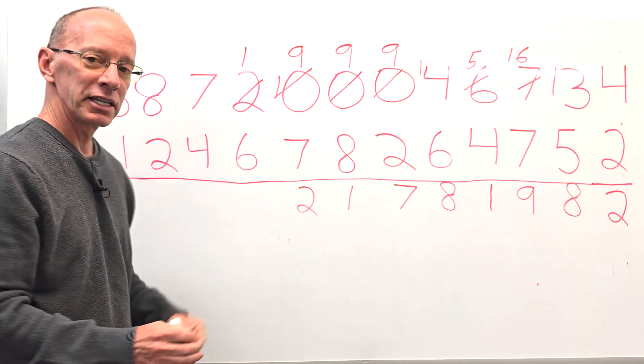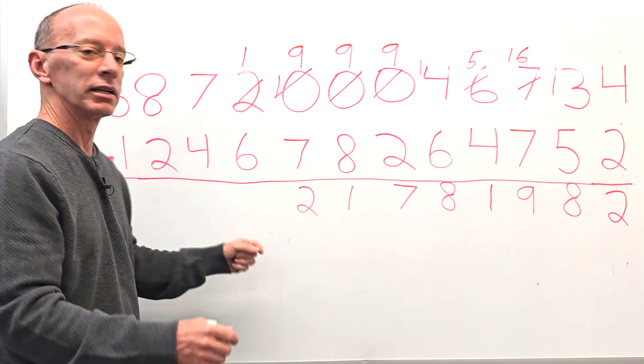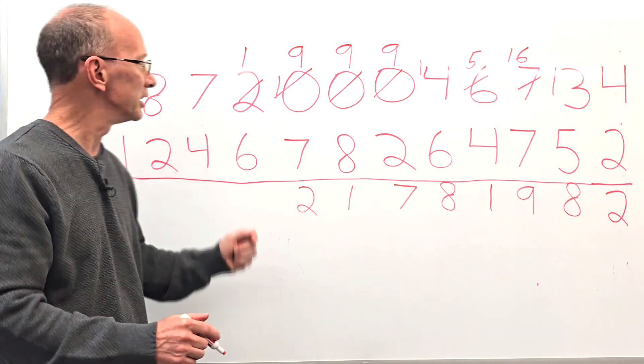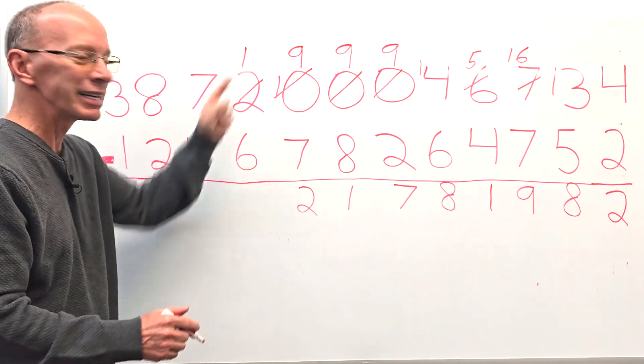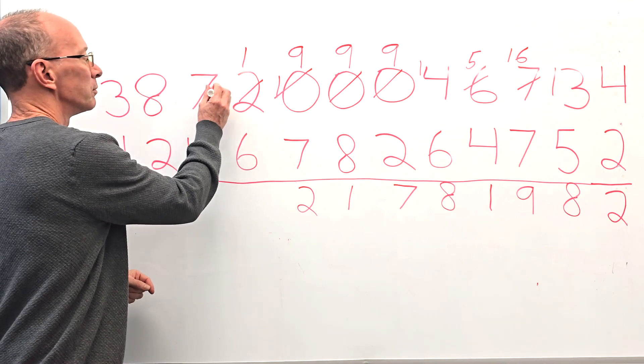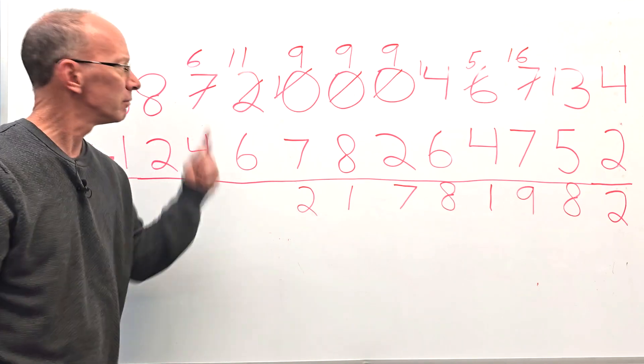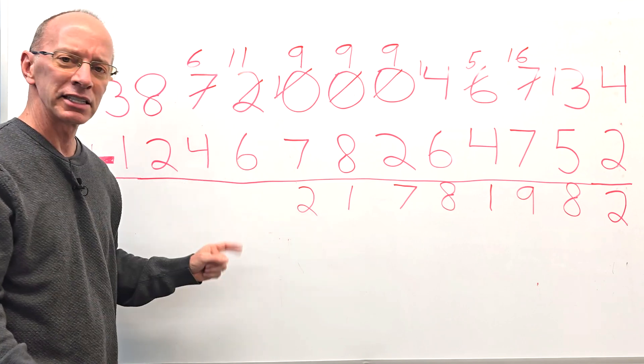One minus six. Got to borrow again, don't we? You thought it was easy, didn't you? No. Got to borrow. We need to make that number bigger. Take one from the seven. Make that a six. Now I got a six. Eleven. Eleven minus six is five.